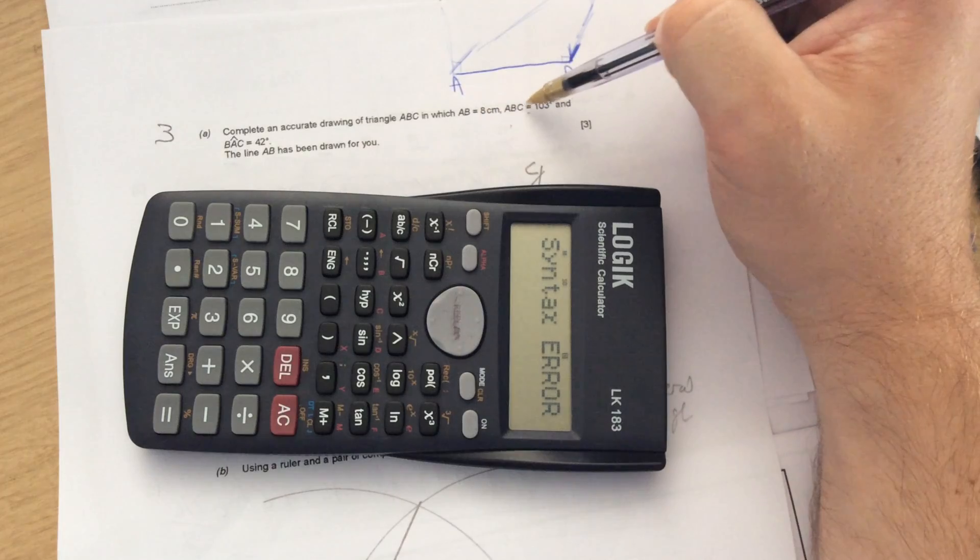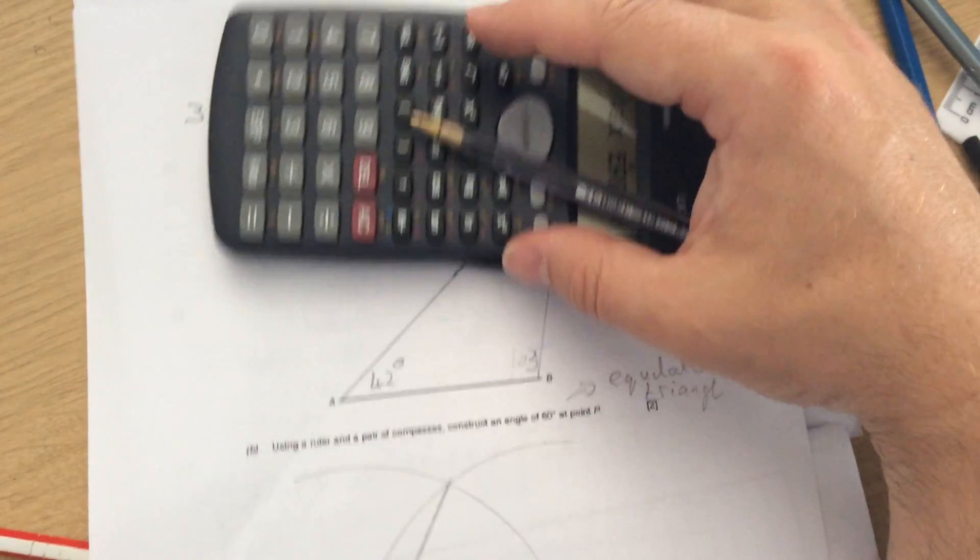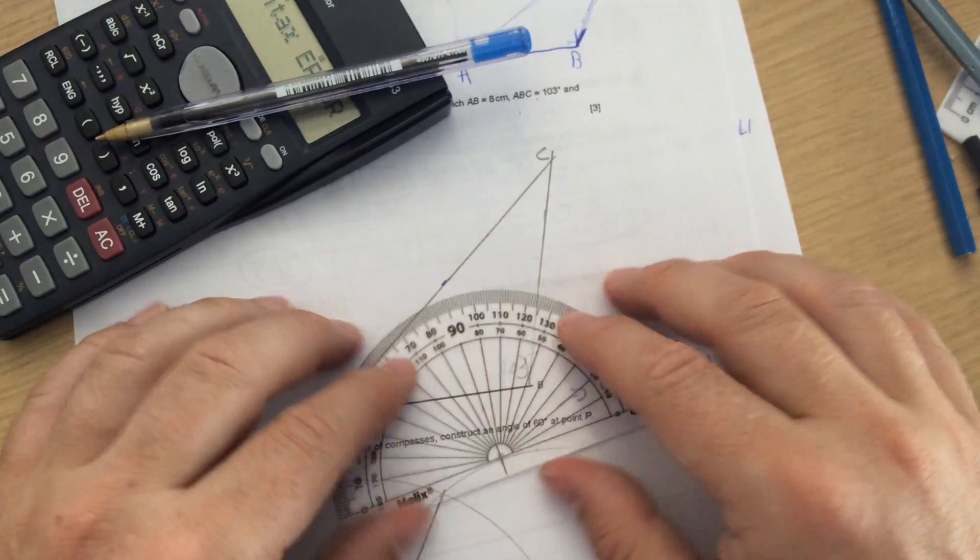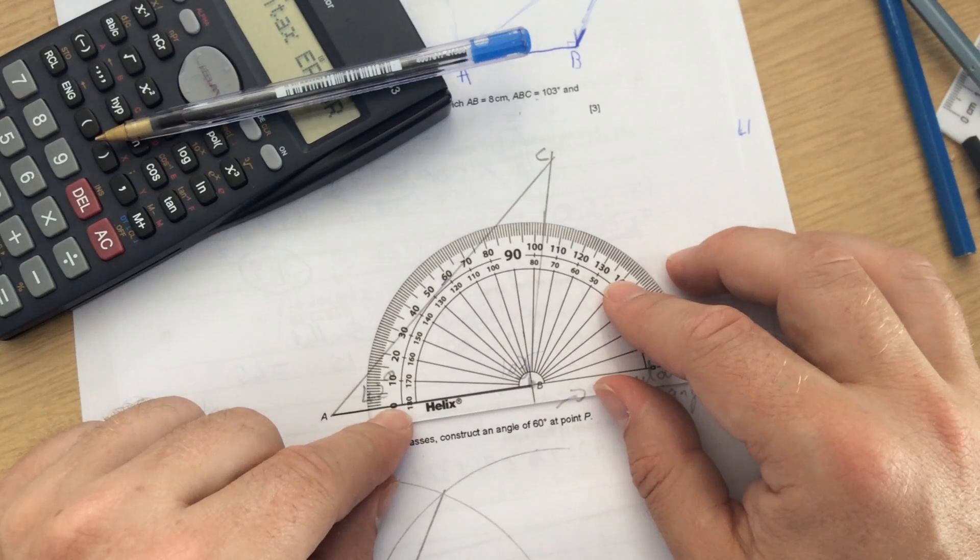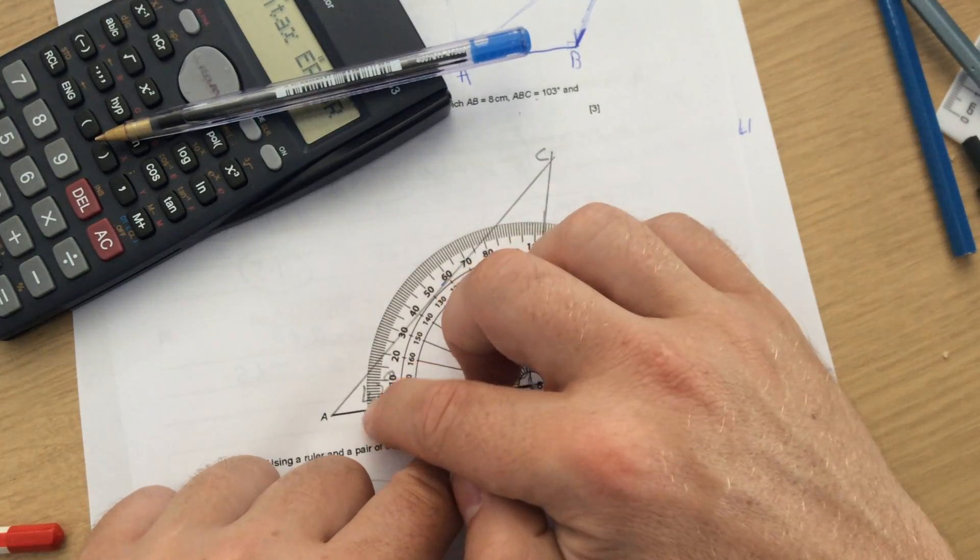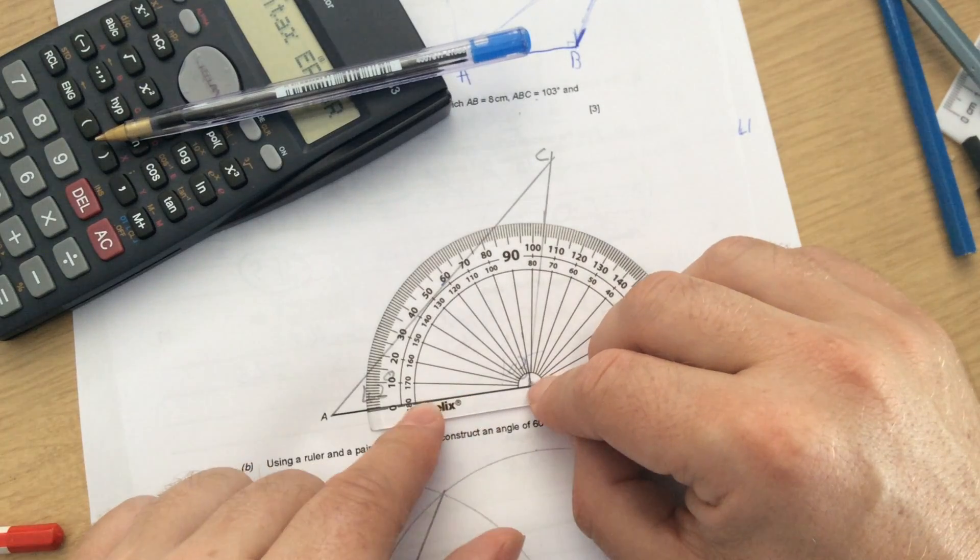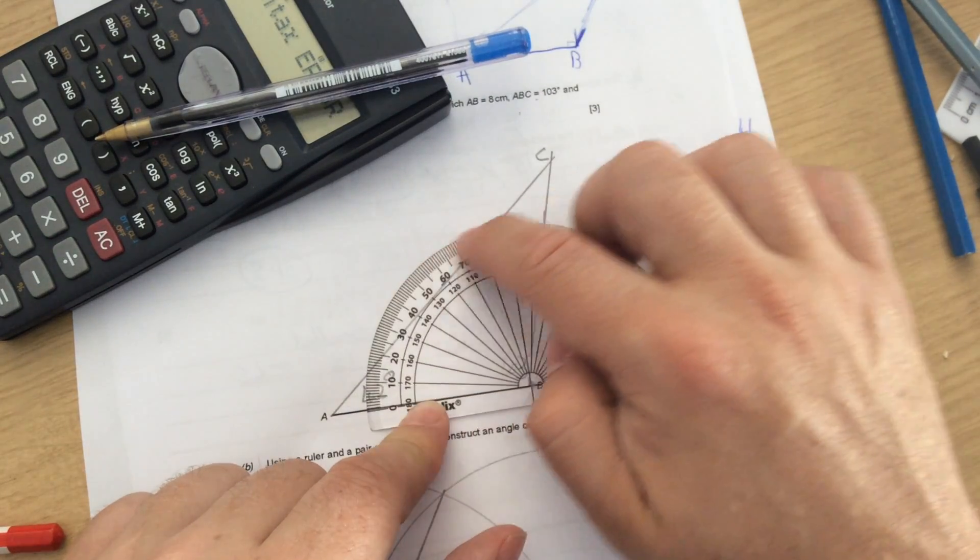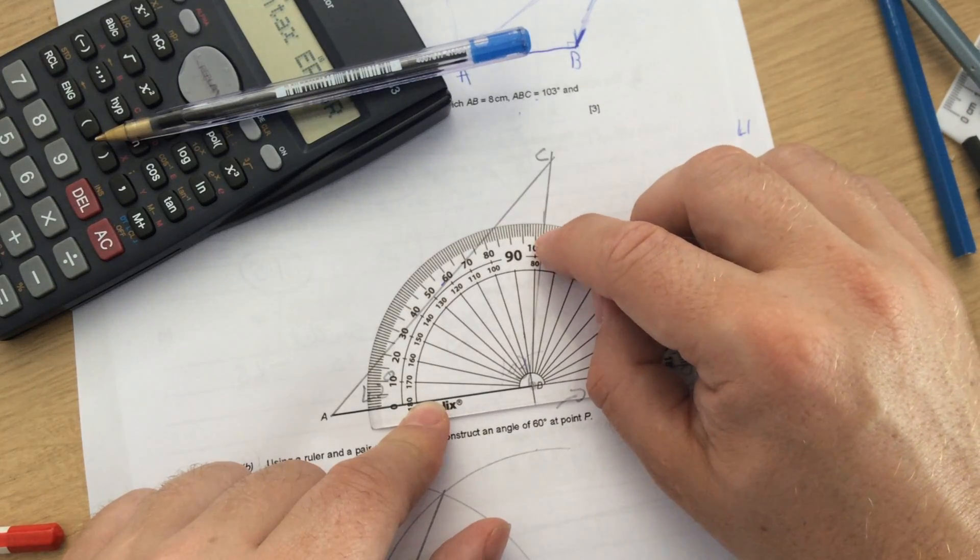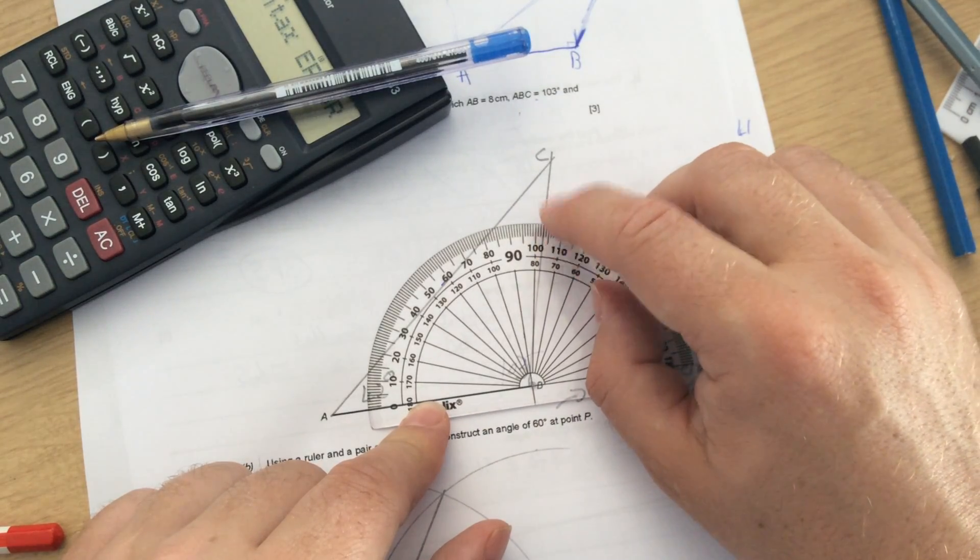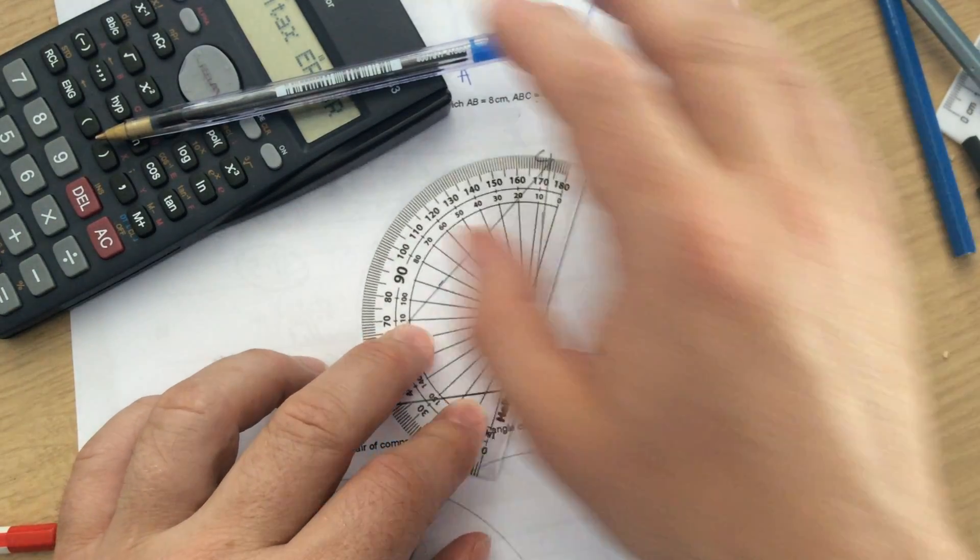Just have a look then, angle ABC is 103 degrees. So what you have to do is put your protractor on B, and because 0 is on the outside, you're going to be using the outside numbers. Making sure B is on the dot and the line is on 0, 103 is just past 100. So you've got 100, 101, 102, 103. You would mark 103, and then draw a big line up through there.